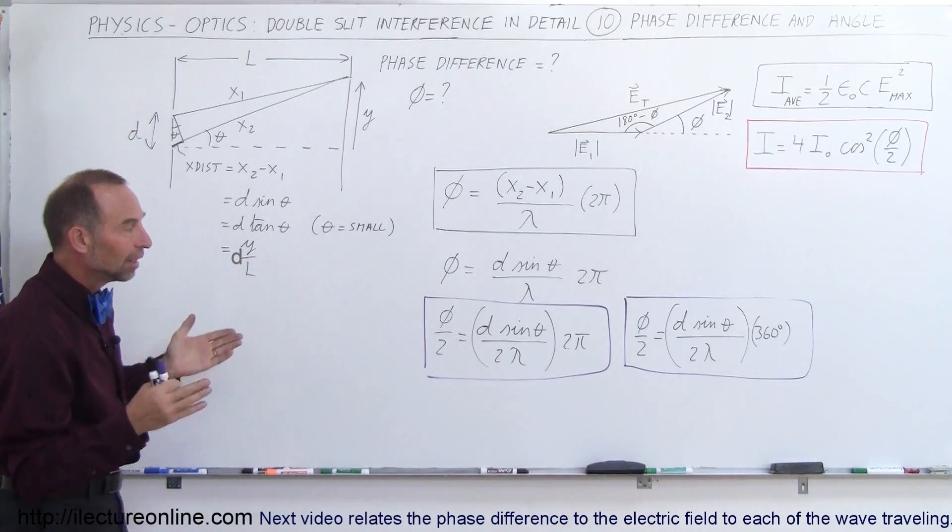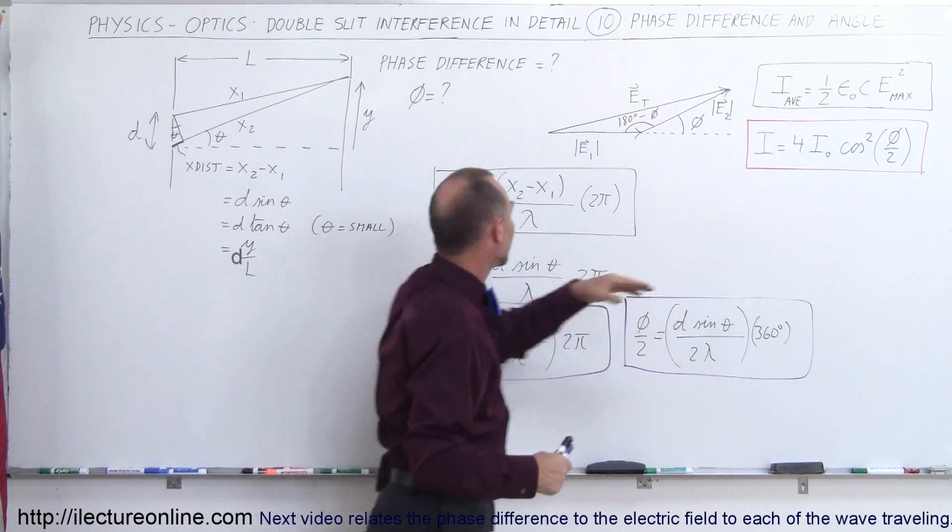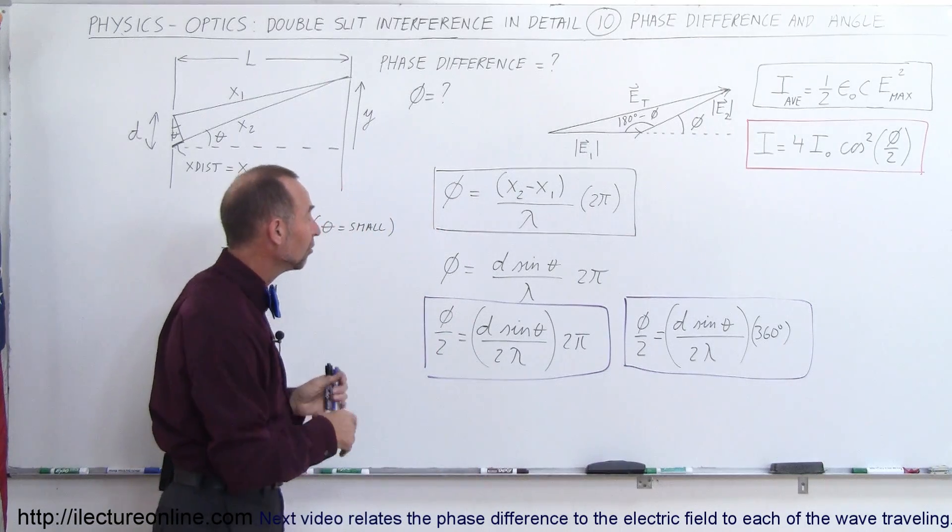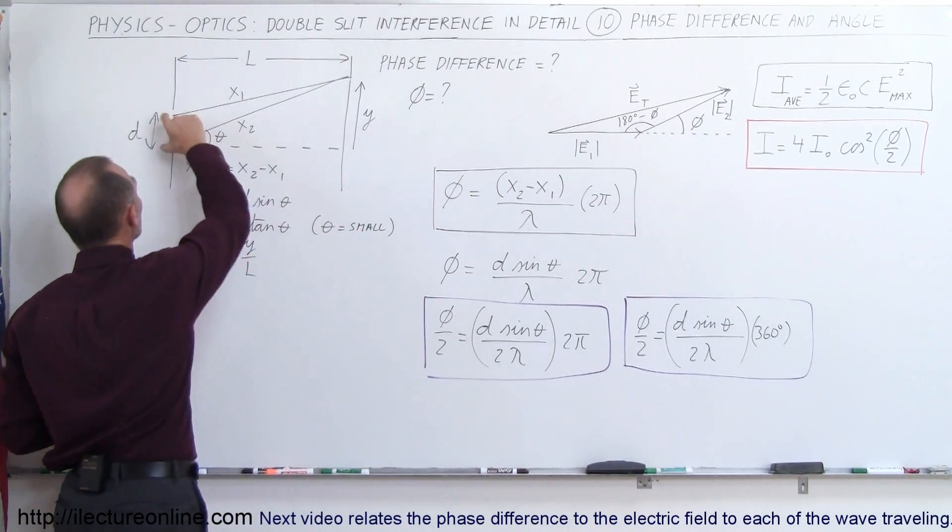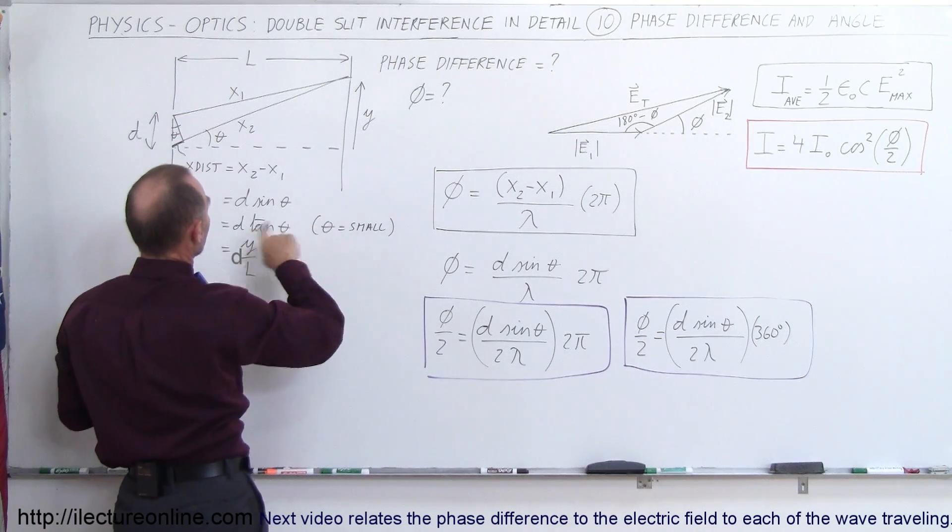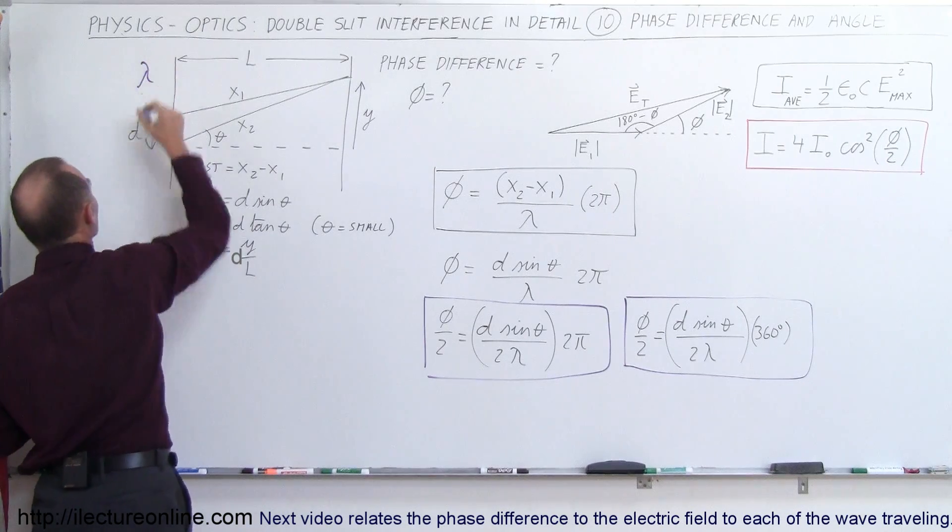So now you have two options. If you know what the extra distance is, you can use this equation right away by realizing the phase difference is defined as the extra distance. If you don't know what the extra distance is, but you do know what the angle is, you do know what the slit distance is, and you know what the wavelength, of course you still need to know the wavelength in order to figure that out.